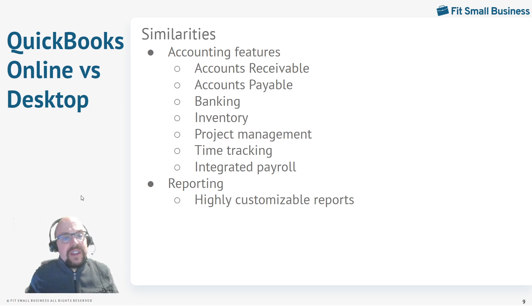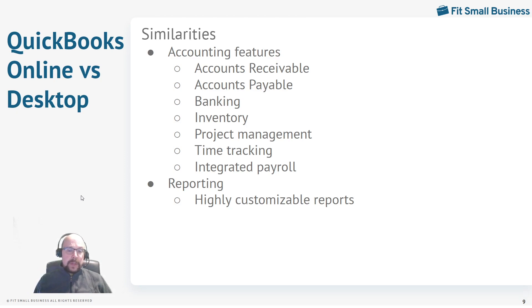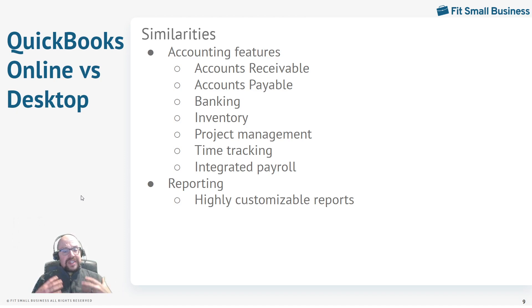Let's get into more detail on the similarities and differences between QuickBooks Desktop and Online. Accounting-wise, they're very, very similar: accounts receivable, accounts payable, banking, inventory, project management, time tracking, integrated payroll. There are a few differences — for inventory, QuickBooks Online uses the FIFO cost flow method whereas QuickBooks Desktop uses the average cost method. For tracking income and expenses, QuickBooks Desktop can track by classes but not locations, while QuickBooks Online has tracking by both classes and locations. But these differences are very small compared to the differences in how you access and price the programs.